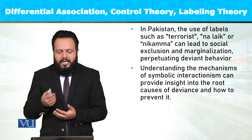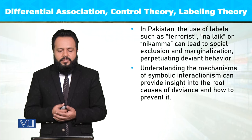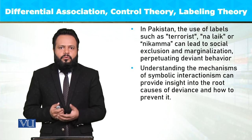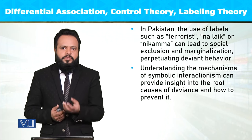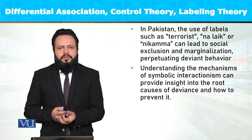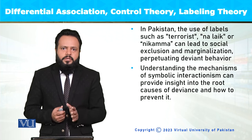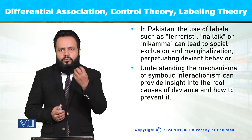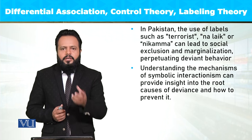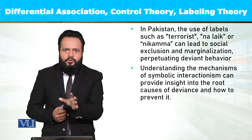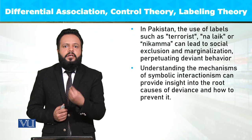Understanding the mechanisms of symbolic interactionism can provide insights into the root causes of deviance and how to prevent it. Symbolic interactionist point of view سے deviant behavior کو observe کرتے ہوئے، as a sociologist ہمیں لوگوں کے رویہ کو ایک particular lens سے سمجھنے میں مدد ملتی ہے — کہ کیسے social control کے mechanisms، differential association، اور labels ایک catalytic role play کرتے ہیں کسی بھی انسان کے deviant یا potentially criminal بننے میں۔